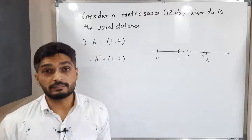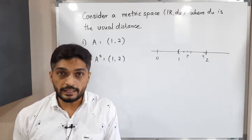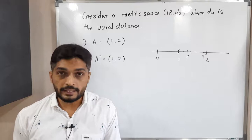We cannot consider points 1 and 2 since these are not elements of the given set, as this is an open interval which does not contain its boundary points. And when we talk about interior points, we select points from the set only — we cannot go outside the set.